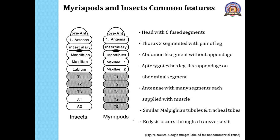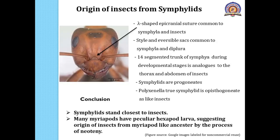Hence we can say the myriapods are the group most closely related to the insects. Looking at the closeness of the symphylids to the insects, we find that the inverted Y-shaped epicranial suture — also referred to as the ecdysial suture — is common to many symphyla as well as the insects. This epicranial suture is well evident in many insects and is one of the common features belonging to the symphyla. The structure of post-mandibular appendages is similar, as is the nature of the hypopharynx in this group.